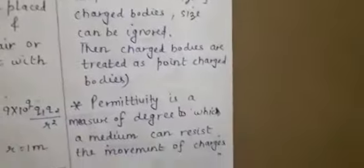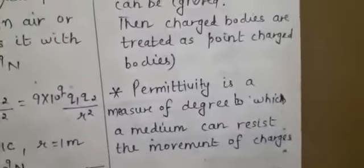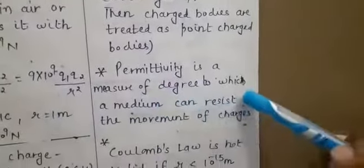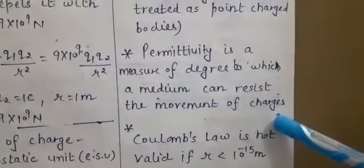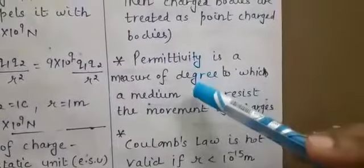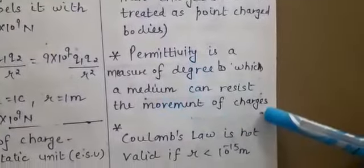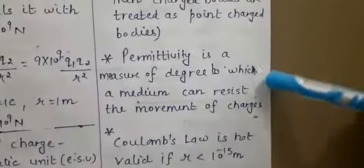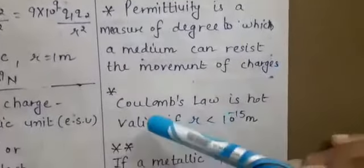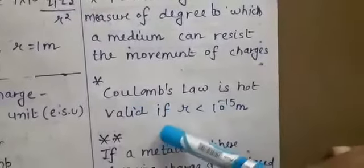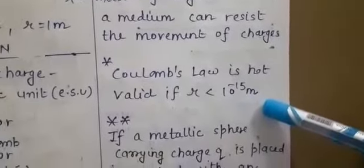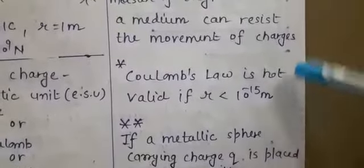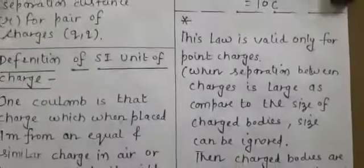Next important point: permittivity is a measure of the degree to which a medium can resist the movement of charges. We have discussed absolute permittivity of air. Another important point: Coulomb's law is not valid if the separation distance is less than 10⁻¹⁵ metre, which is very small and comparable to the dimensions of an atom. These points can be utilized in conceptual problems.